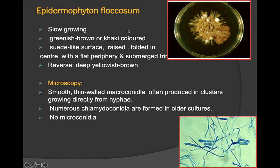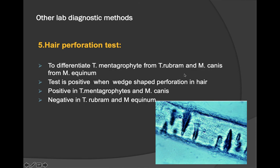Epidermophyton floccosum is a slow-growing dermatophyte with a greenish-brown or khaki-colored, suede-like surface that is raised and folded in the center; the reverse shows deep yellowish-brown pigmentation. Microscopy shows smooth thin-walled macroconidia produced in clusters directly from the hyphae. There are no microconidia in E. floccosum — only macroconidia.